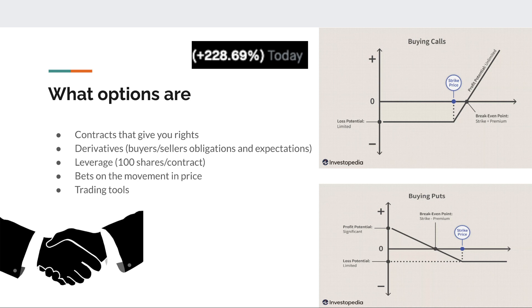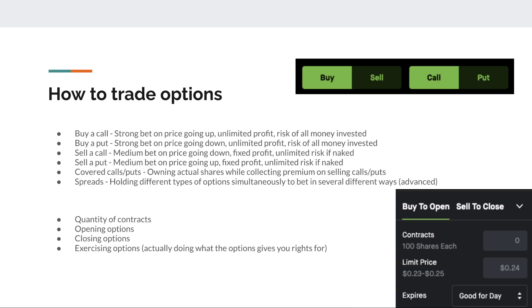To summarize: you're betting on a stock to move a certain amount in price by a certain amount of time, whether you're buying or selling calls or puts. I'm not going to dive deep into iron condors and straddles — check the links in the description for that. Personally I use options as trading tools. Other people might use them to hedge positions or to exercise them and buy the underlying stock — there are a lot of ways to use options.